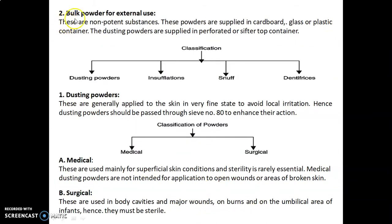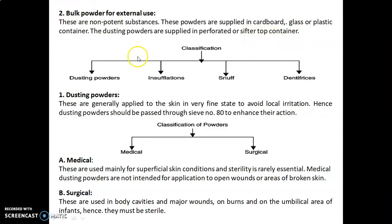Second, bulk powder for external use. These are non-potent substances supplied in cardboard, glass, or plastic containers. Dusting powders are supplied in a perforated or sifter-top container. The classification of bulk powder for external use includes: dusting powder, insufflations, snuffs, and dentifrices. We will discuss about dusting powder.